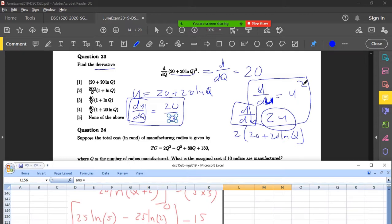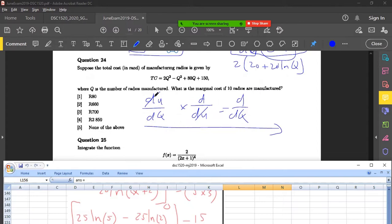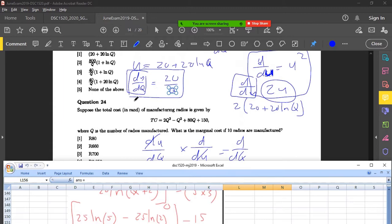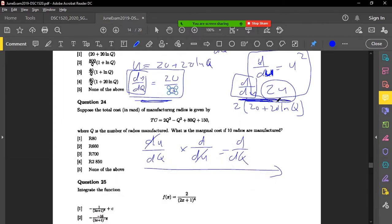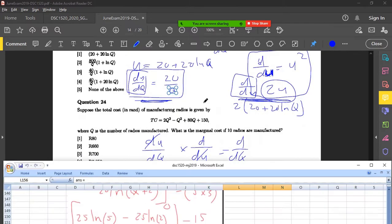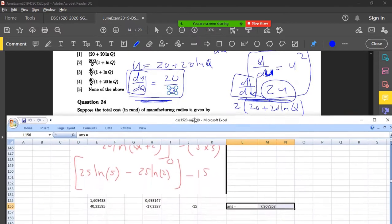Yes, okay. So if I find the derivative of du, then I've got 2u. Yes, okay, because I've got u substitution, the u equals this 20 plus 20 ln q. Okay, this needs to be derived, so du over dq is 20 over q. And then you just need to multiply those two together. Du over dq times d over du equals d over dq. So you're taking this and you're multiplying it by that. Okay, and if you do that, you're going to get the right option.